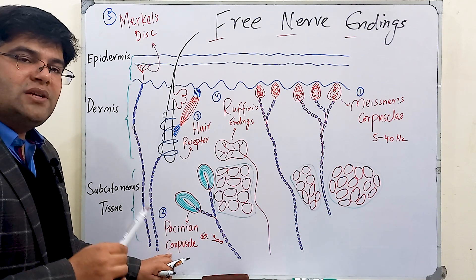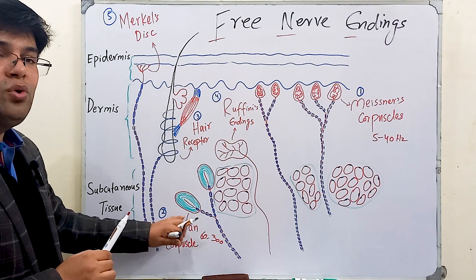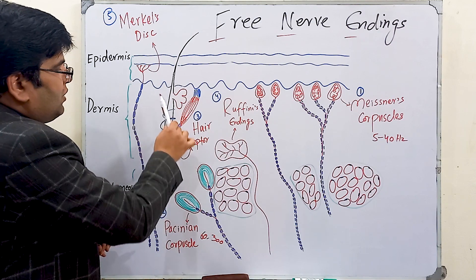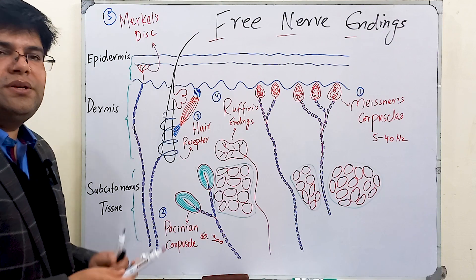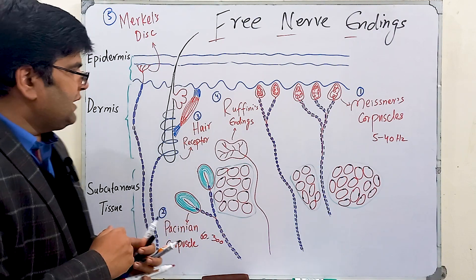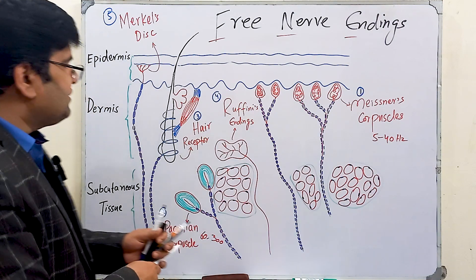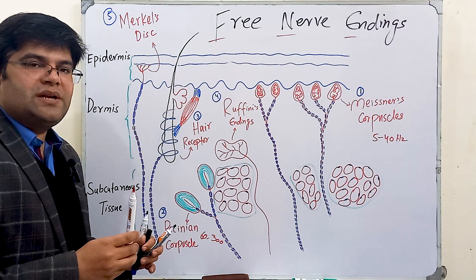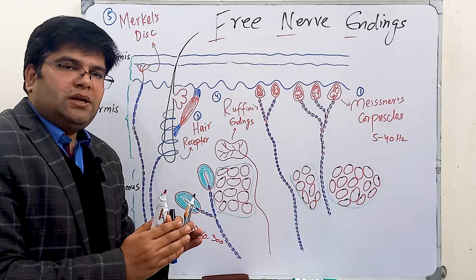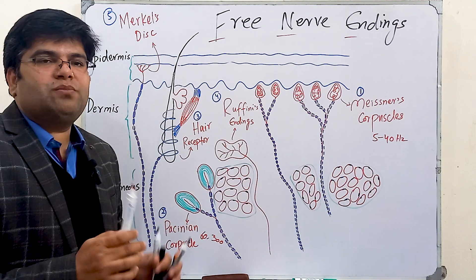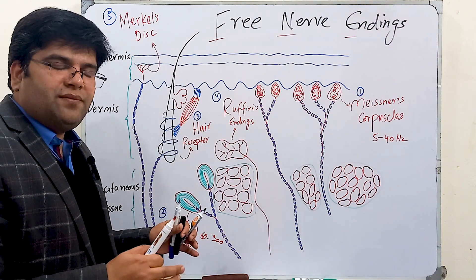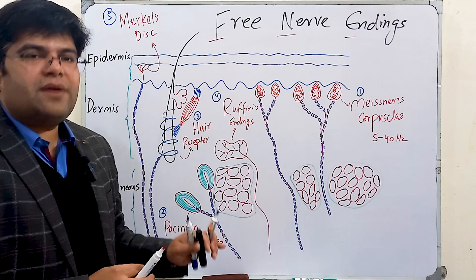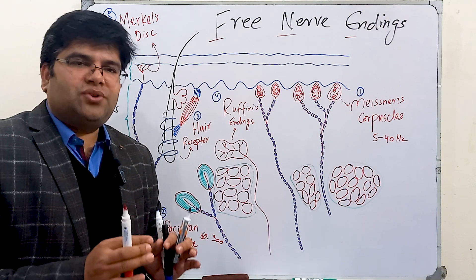Pacinian corpuscles detect fast vibrations and deep pressure; they are the most rapidly adapting receptors. Hair follicle receptors are present in the dermis around the lower part of the hair follicle. They detect motion and movement across the skin and also gentle touch — for example when an insect crawls across the skin. They are rapidly adapting receptors with a rapid on-and-off response; they do not respond to sustained stimuli. Ruffini endings have a large receptive field; they are present in the dermis and also in joint capsules, detecting deep sustained pressure like massage, and stretch and rotation of joints.